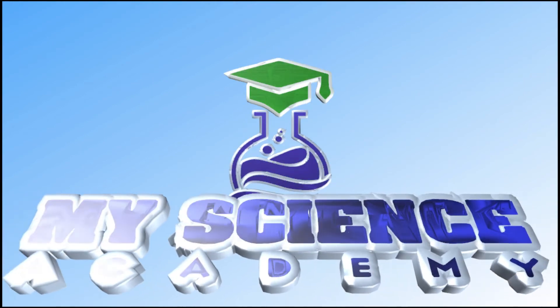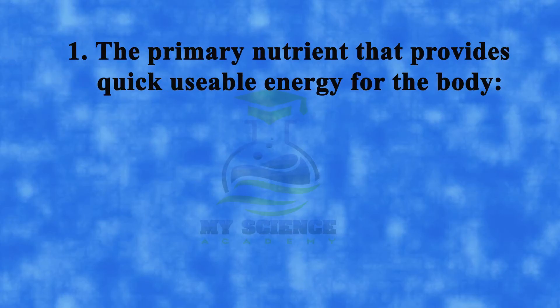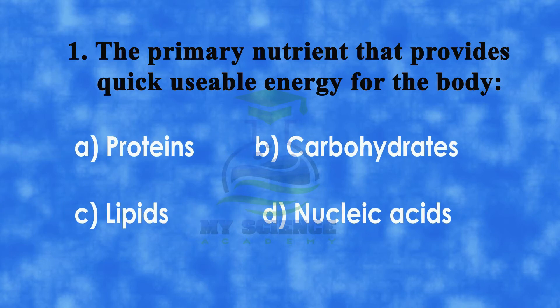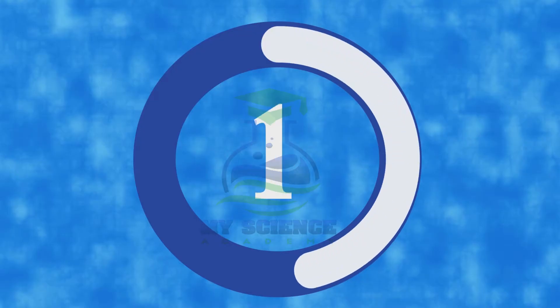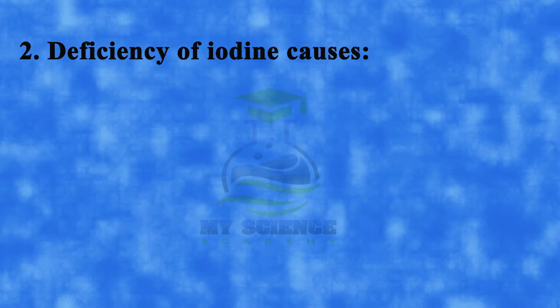Assalamu alaikum dear students, welcome to my science class. Question number one: the primary nutrient that provides quick usable energy for the body is — a) proteins, b) carbohydrates, c) lipids, or d) nucleic acids. The correct answer is b) carbohydrates.